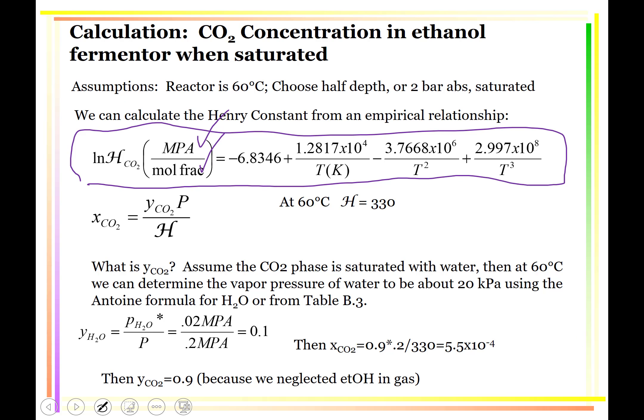And so what does that mean? That means the partial pressure, which has units of, in this case, megapascals, and the mole fraction in the liquid, then this is what the units of the Henry constant are going to be.